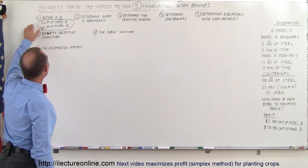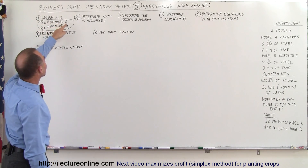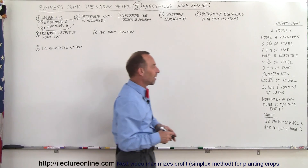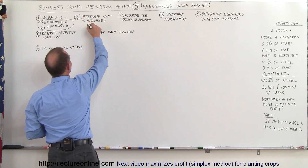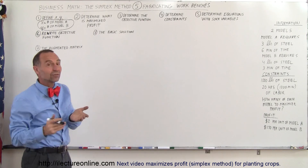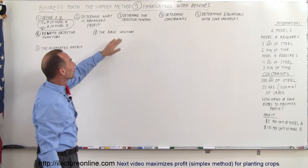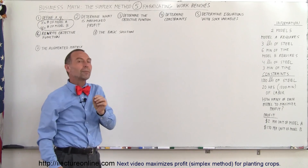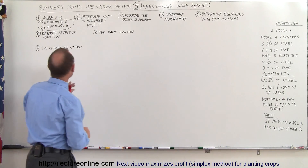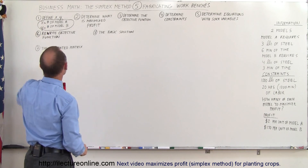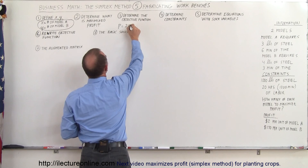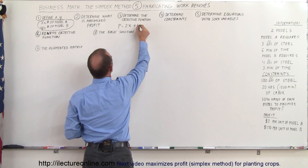The first thing we want to do is define the variables. Since we have two models, we'll let x equal the number of Model A we're going to produce, and y equal the number of Model B. Next, we need to determine what we're going to maximize — in this case, the profit. We define the objective function: since we make two dollars for each unit of Model A and a dollar fifty for each unit of Model B, the profit equals 2x plus 1.5y.